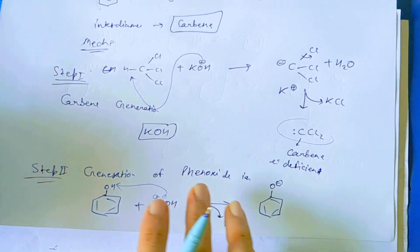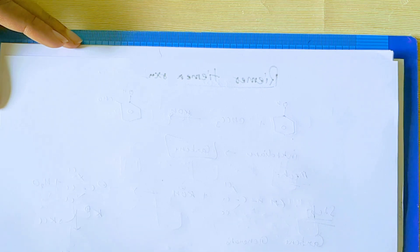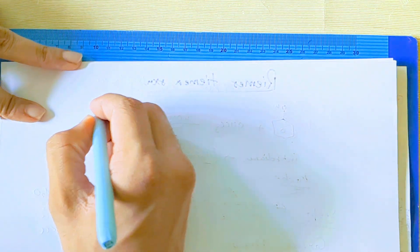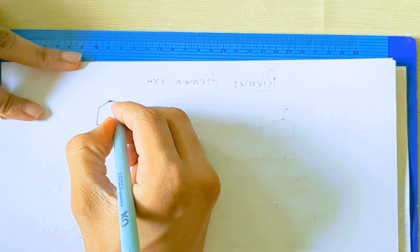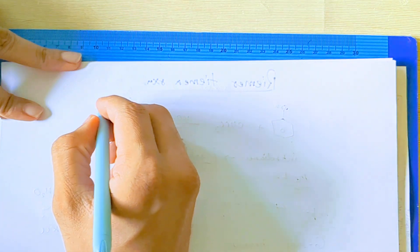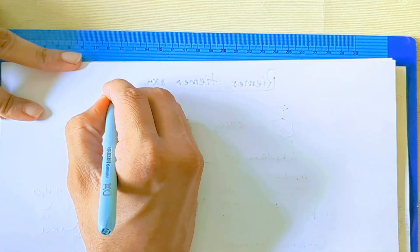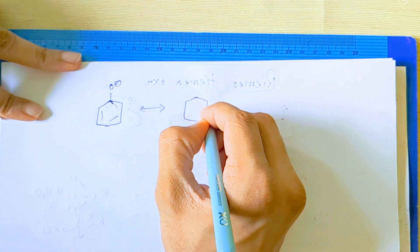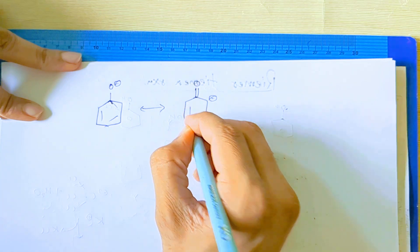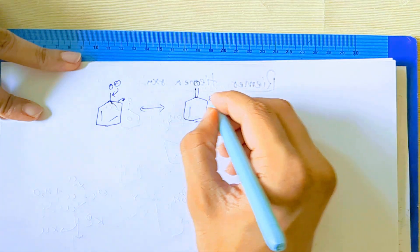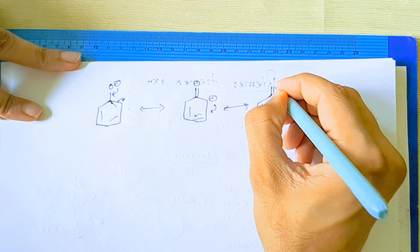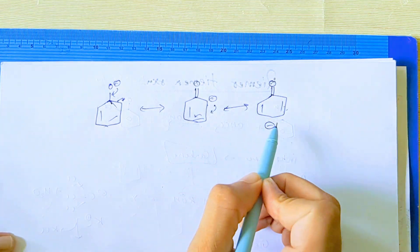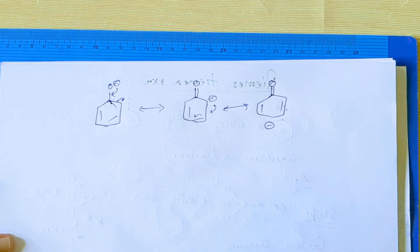The phenoxide anion is stable by resonance. Let's draw the resonance structure of this phenoxide ion to get the position where the electrophile has to attach. The resonance structures show anion at ortho and para positions. You can see the ortho and para positions are the electron-rich sides, so the electrophile will attach to the ortho and para positions.